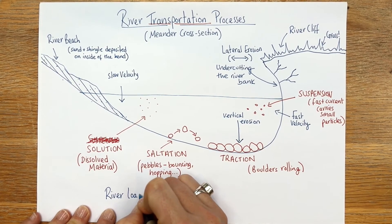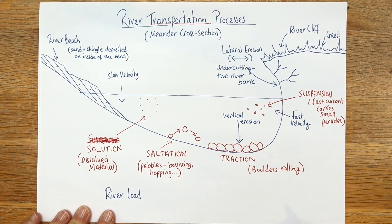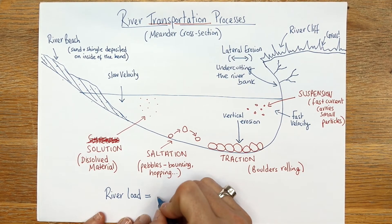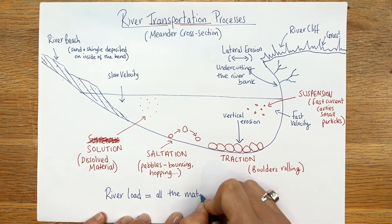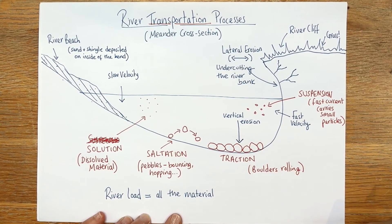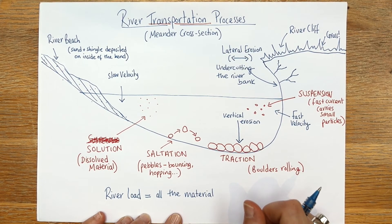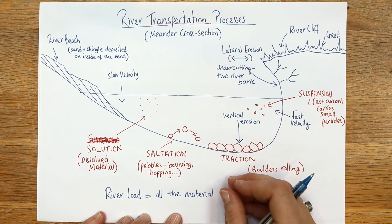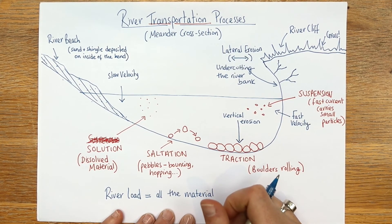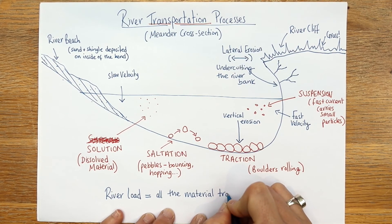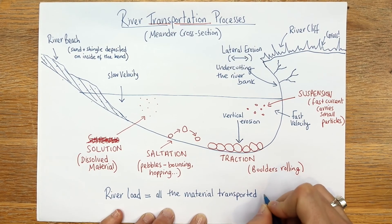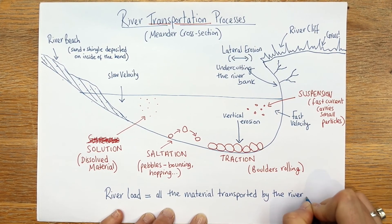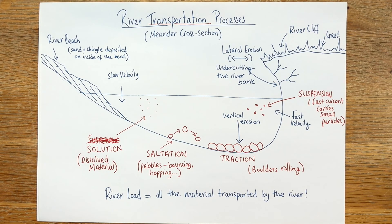One other thing you need to know is river load. River load is the term we use to describe any material that is being moved along by the river. Write: 'river load = all the material'. If you go to a river and scoop around with a little net you'll see mud, clays, sand, shingle, shells - all sorts, especially in estuary rivers. It's all the material that has been or is being transported by the river. So there you have it - river transportation processes including our meander cross section. Hope that helps!